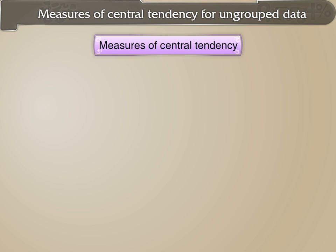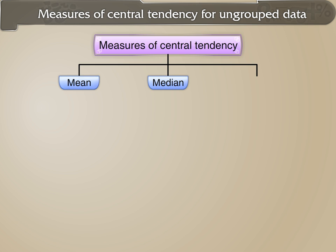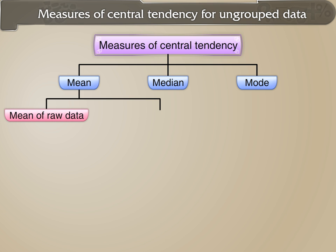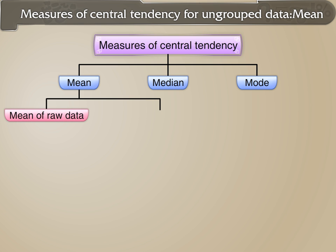We will study the following measures of central tendency: mean, median, and mode. First, we will learn how to find the mean of raw data, then we will find the mean of ungrouped data.